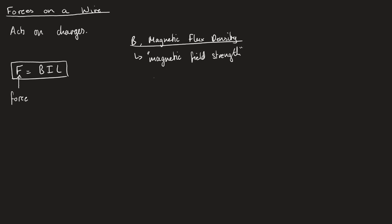Magnetic flux density is measured in Teslas, which we denote as T - Teslas, just like the car named after Nikola Tesla and his work on these magnetic fields and electromagnetic induction. I is fairly straightforward - we've already known for a while that I is just current. And L is just the length of wire that is inside the magnetic field.